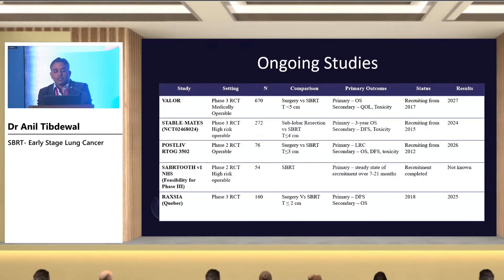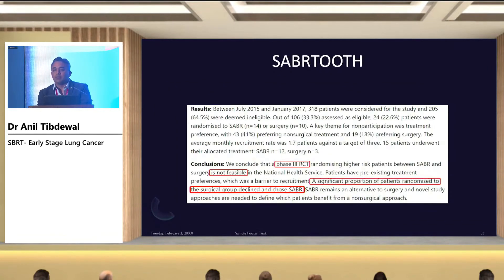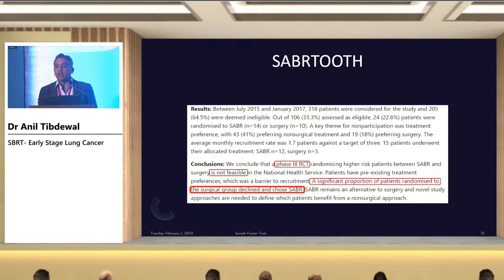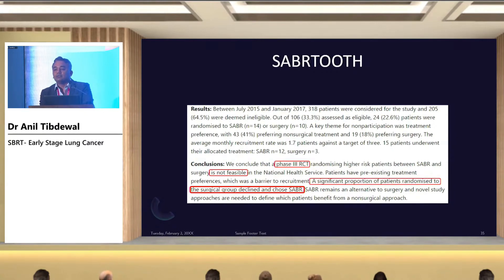Ongoing studies are comparing SBRT versus surgery. We need to wait for results to definitively say SBRT is equivalent to surgery. One UK study, Sabertooth, published in abstract form concluded that a phase 3 randomized control trial was not feasible in the NHS, because many patients randomized to the surgery group declined and chose SBRT instead, and the accrual rate of 4 to 5 patients per month was not met.